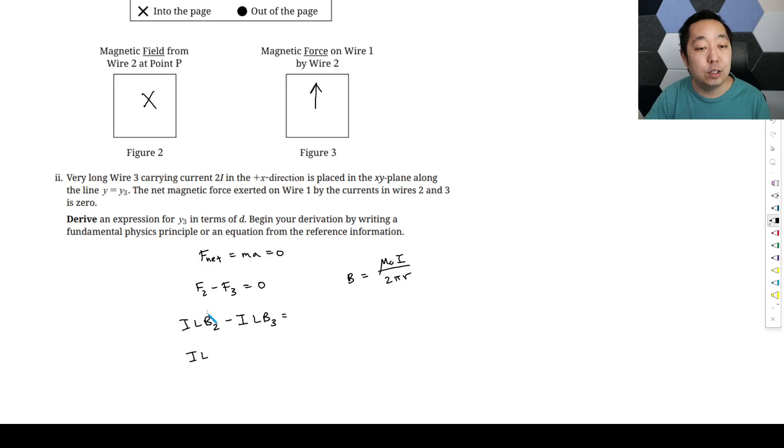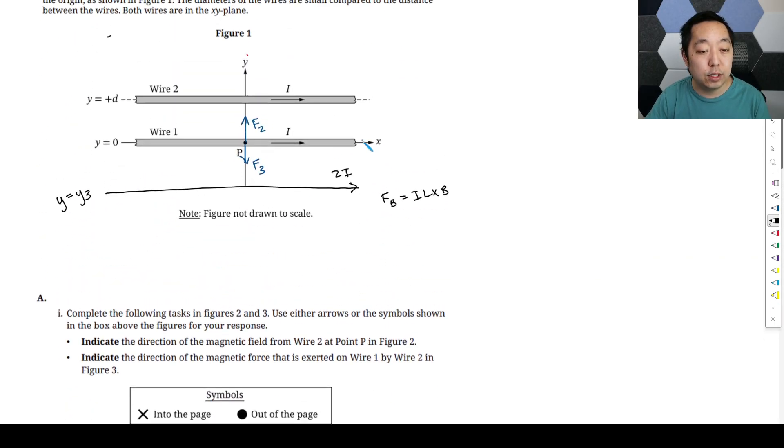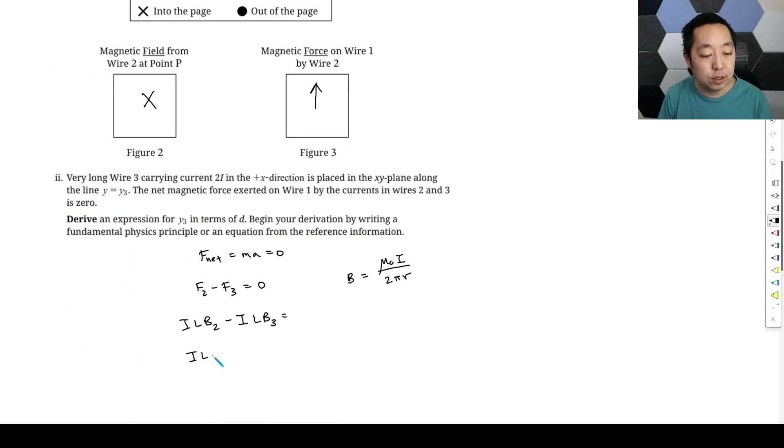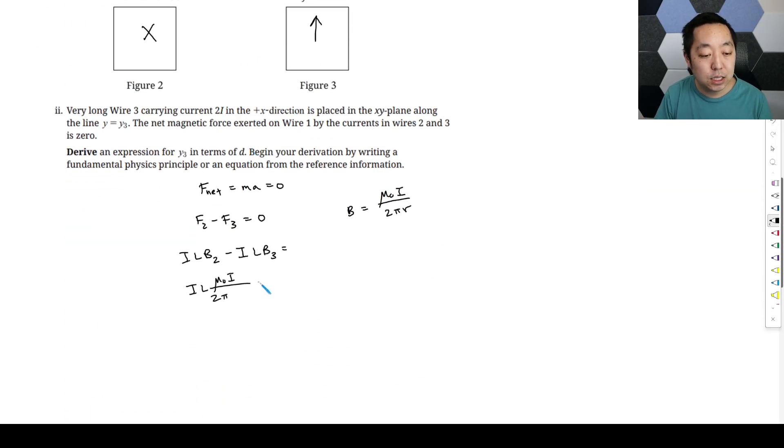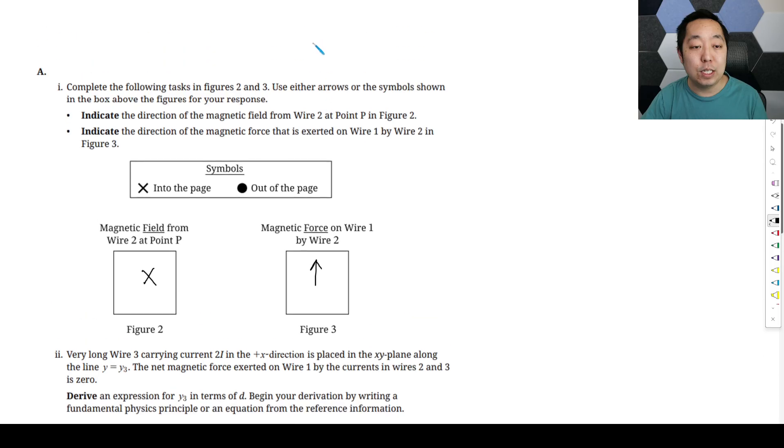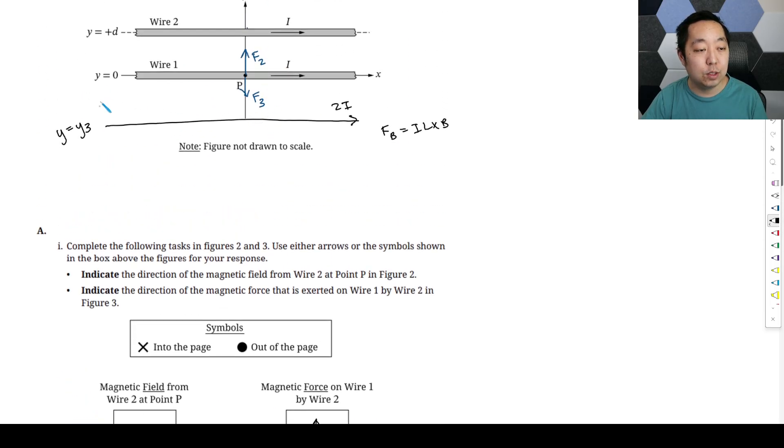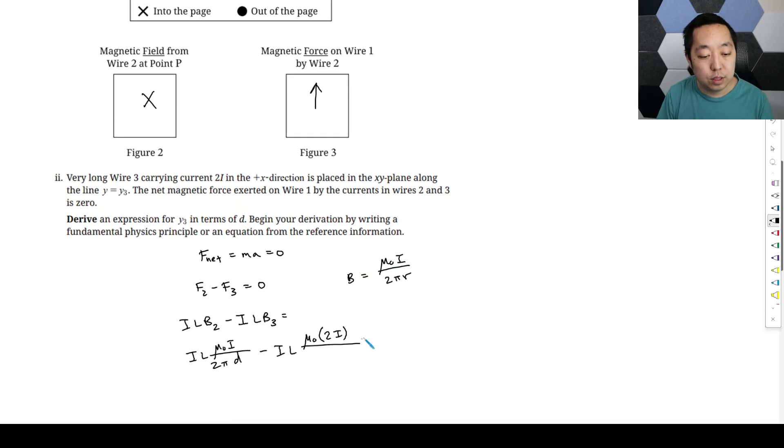So the magnetic field from wire 2, wire 2 has a current I, so this is mu naught I divided by 2 pi. The distance from wire 2 to wire 1 is D. Minus IL, and the magnetic field for 3 is mu naught, and the current through wire 3 is 2I. And then the distance between this third wire and this guy right here is Y3. So Y3, and that equals 0.